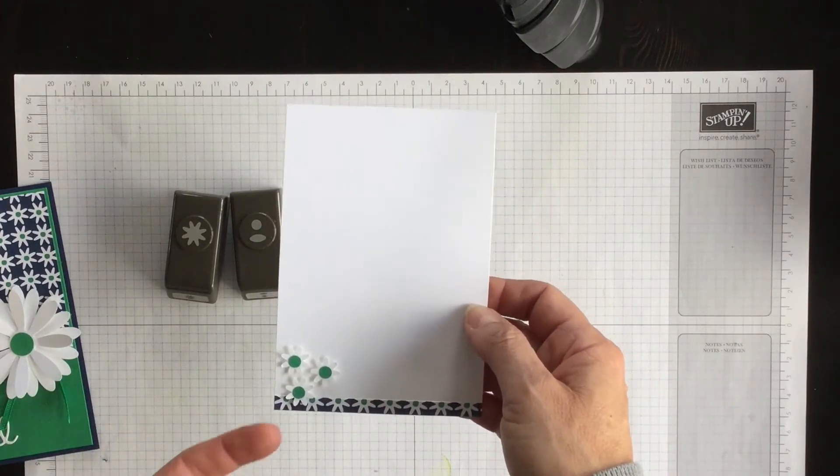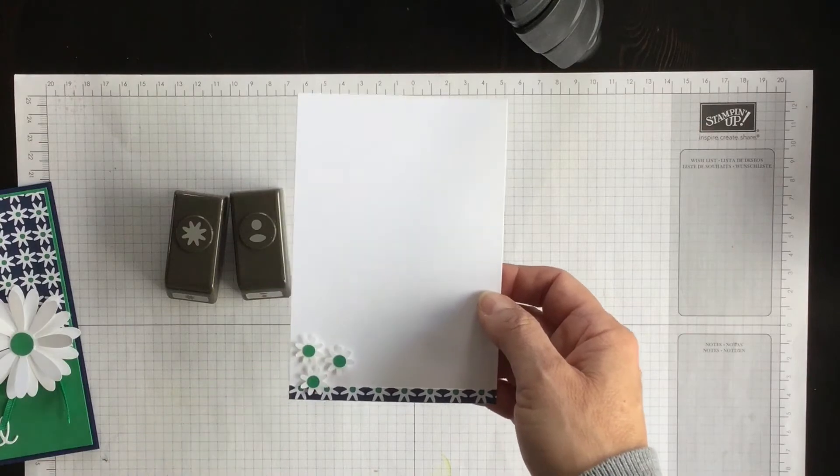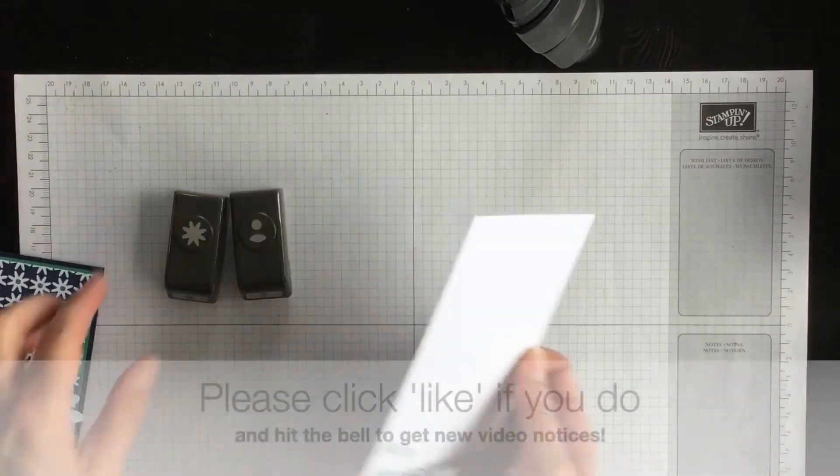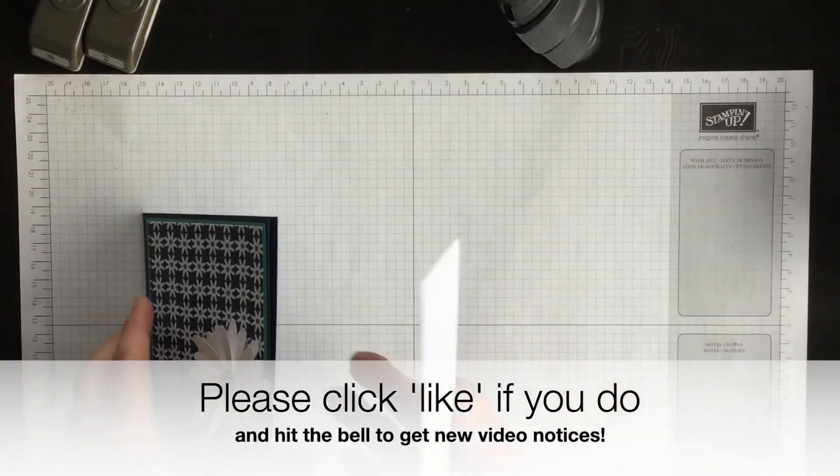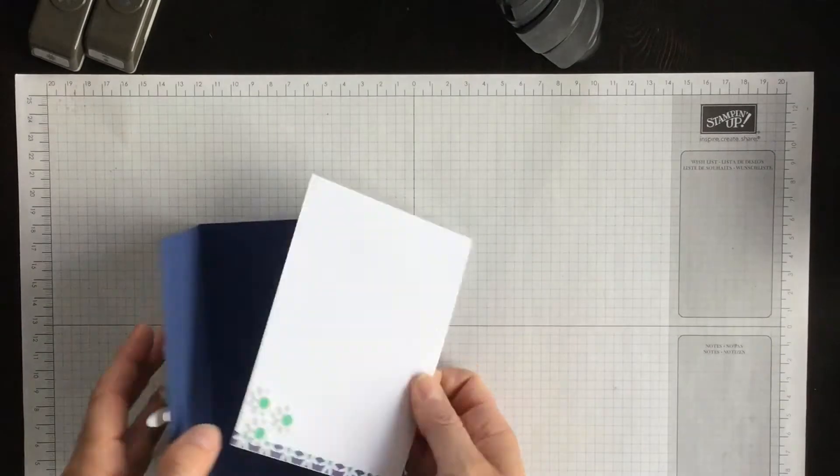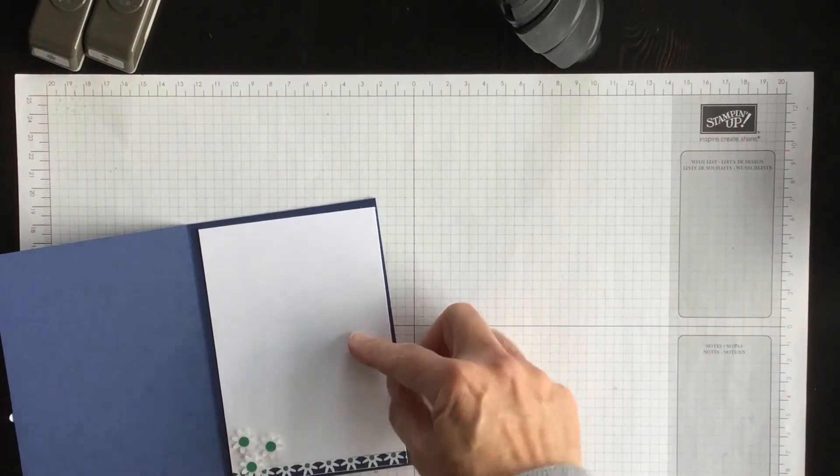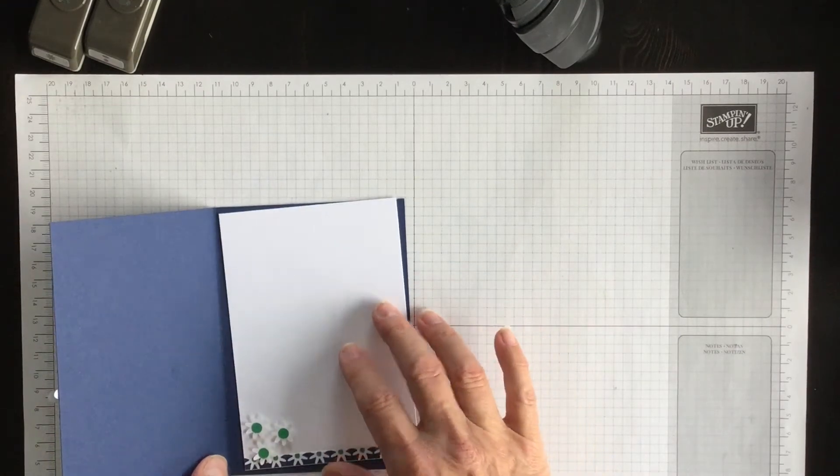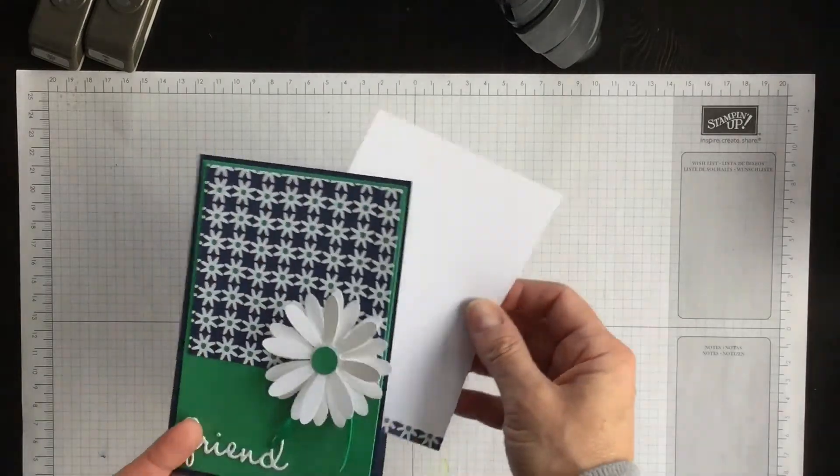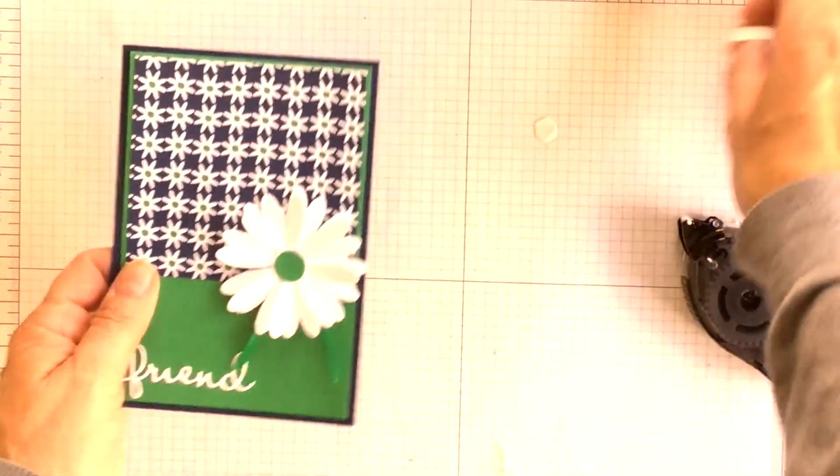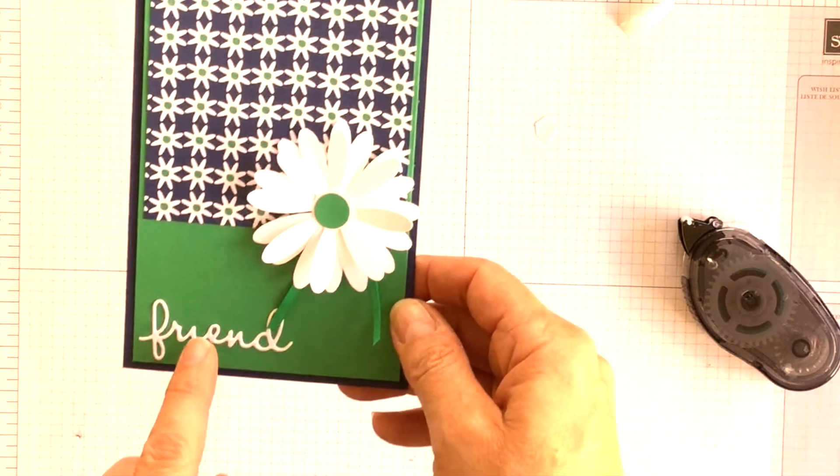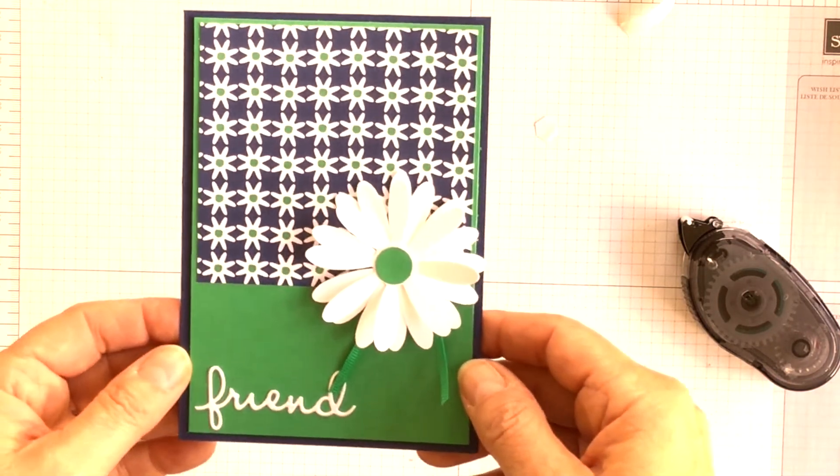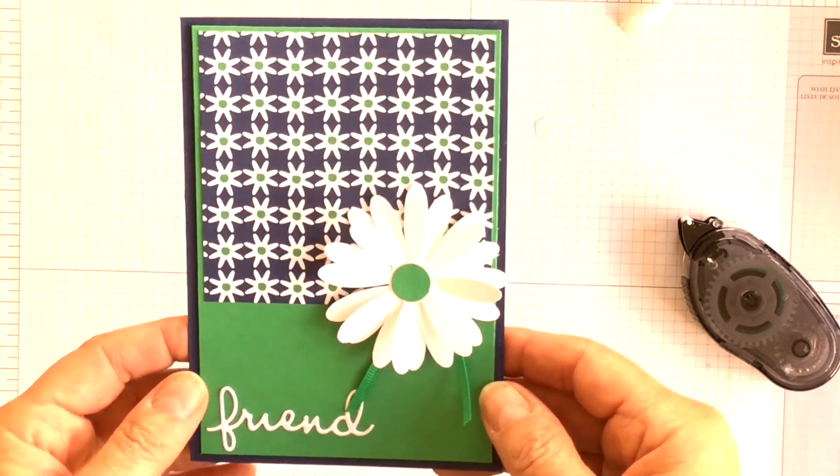And then I used some mini Stampin' Dimensionals to pop them up off the card layer so that when I adhere it inside it'll just be a really nice surprise to see when the card is opened. It's a nice way to pull all of the elements together. Now the other thing you can do is you could add an embellishment as the dot on the i and I probably will do that after the video ends.